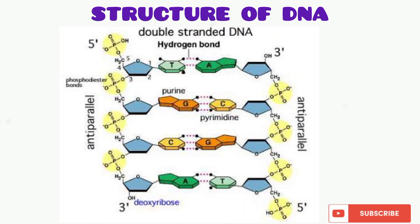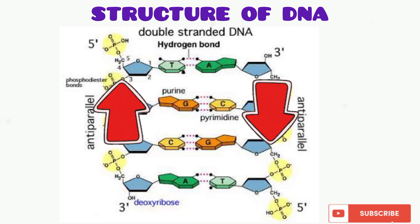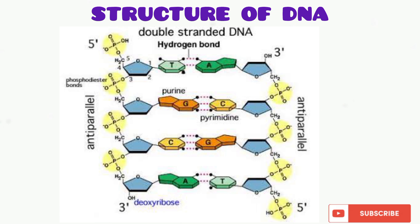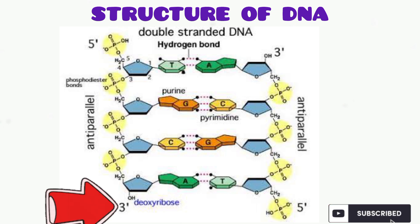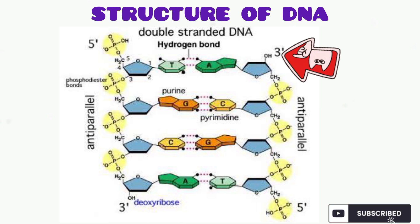The last aspect of the DNA structure to discuss is the antiparallel nature. The two strands of DNA actually run antiparallel to each other — one is running in one direction and the other is running in the opposite direction. As you can see on your screen, one runs in the direction of 3-prime to 5-prime while the other runs 5-prime to 3-prime.